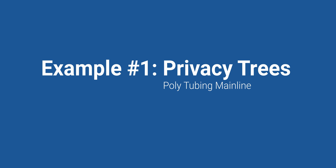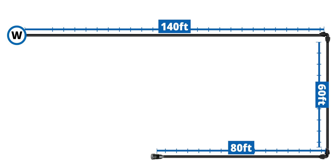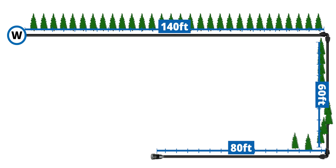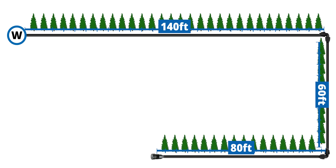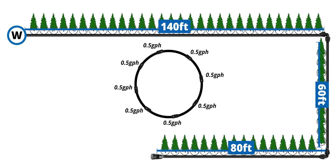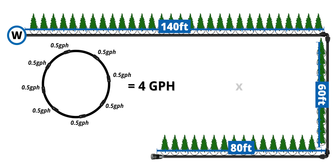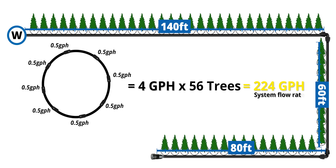For our first example, a tree irrigation system — we need to irrigate a line of trees that will serve as a privacy screen. The distance from the hose bib to the last tree in line is going to cover 280 feet. There will be a tree about every five feet for a total of approximately 56 trees. Each tree will have a dripline tree ring with eight 0.5 gallon per hour emitters, meaning each tree will receive four gallons per hour. Multiplying that by 56 trees gives us a system flow rate of 224 gallons per hour.